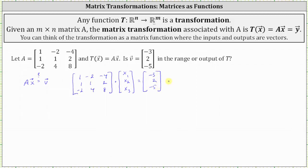Again, we'll set this up as an augmented matrix, where the first row is one, negative two, negative four, negative three. Second row is one, one, two, two. The third row is negative two, four, eight, negative five.